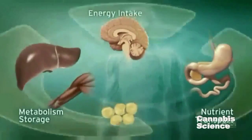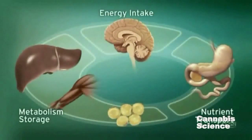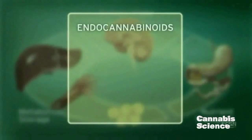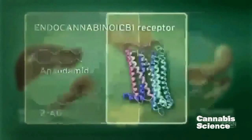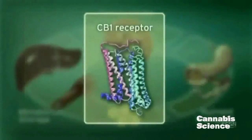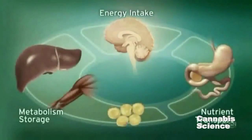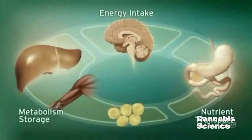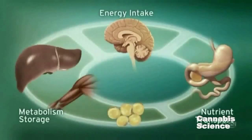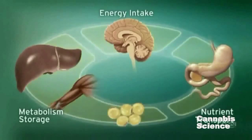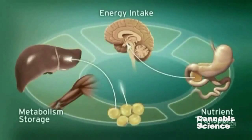The ECS regulates these processes through endogenous ligands, such as anandamide and 2-arachidonylglycerol, and the CB1 receptor. CB1 receptors are located in the brain, digestive tract, muscle and adipose tissue. Integration of these central and peripheral ECS components is achieved through neuronal and hormonal signaling.